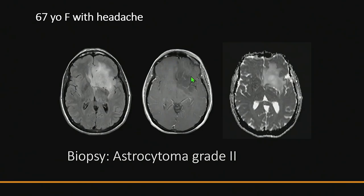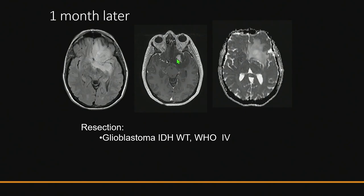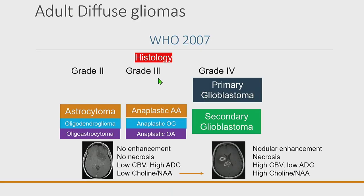Another similar case: an older patient with a non-enhancing tumor had a biopsy showing astrocytoma grade 2. That is not glioblastoma, even though this is likely a primary brain tumor at this age. But a month later, the patient developed an enhancing nodule that was resected and turned out to be glioblastoma. With these two cases, I want to go over some of the evolution of the WHO criteria over the past few decades.